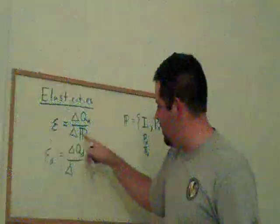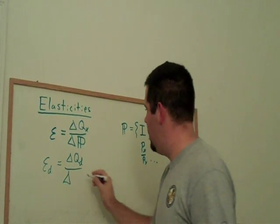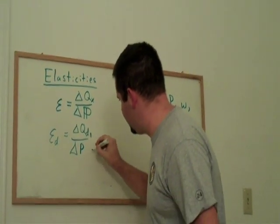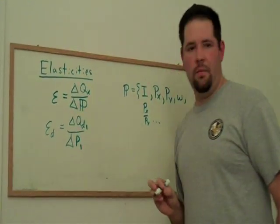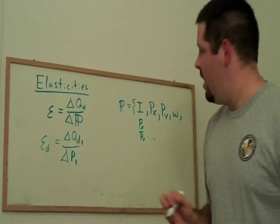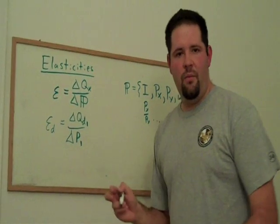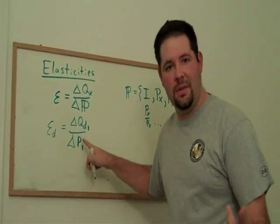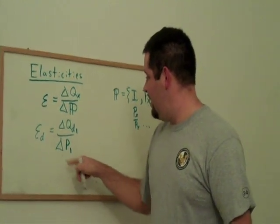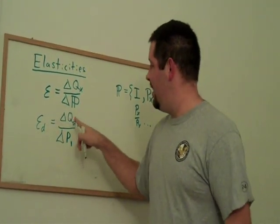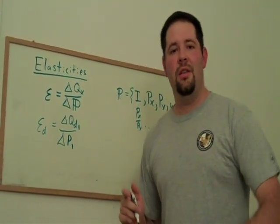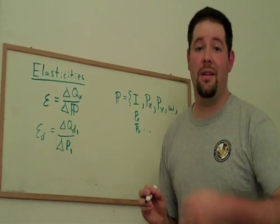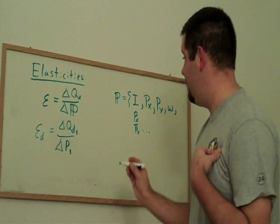So, we can think about the percentage change in the quantity demanded over the percentage change in its own price. So, I'm going to call this good one, and that's going to be the price of good one. And so, we can see that if we change the price, or increase the price by one percent, the elasticity of demand tells us by how much the quantity demanded would decrease, because the law of demand tells us that this is going to be a negative number.